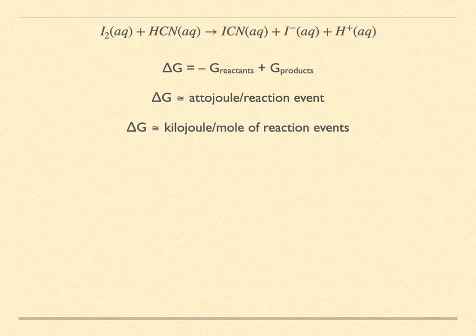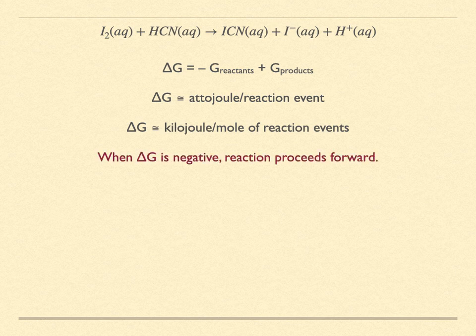As long as delta G remains negative, the reaction events in the forward direction will continue to dominate. While the occasional reverse reaction event may occur in the uphill direction, the system will, on average, continue its descent to lower chemical potential, to lower Gibbs energy.